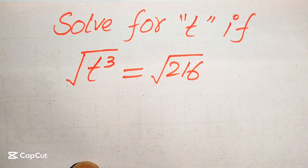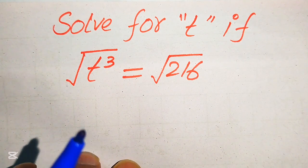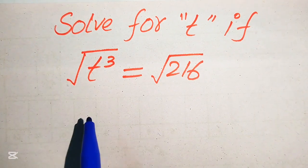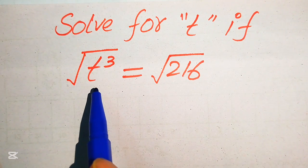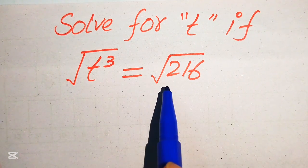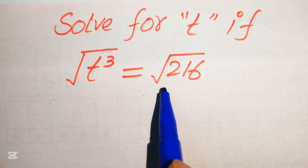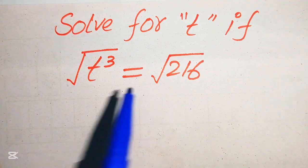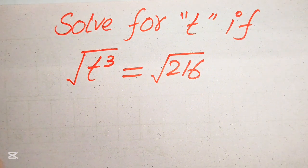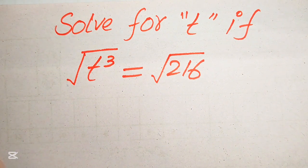Hello everyone, welcome to solve this nice math Olympiad algebra problem. Here we have the square root of t cubed as a whole, which is equal to the square root of 216, and we solve this problem for the values of t.